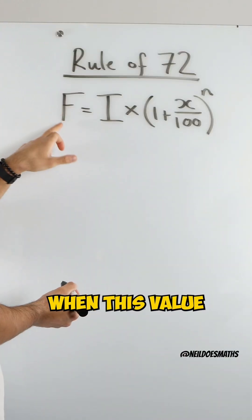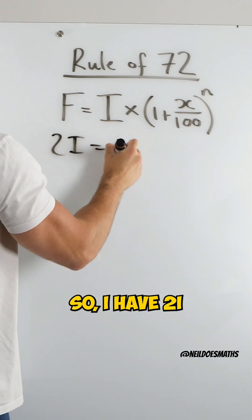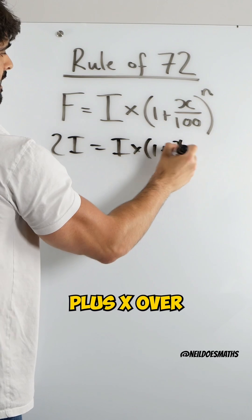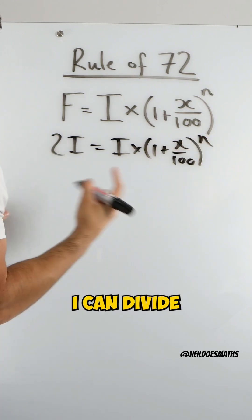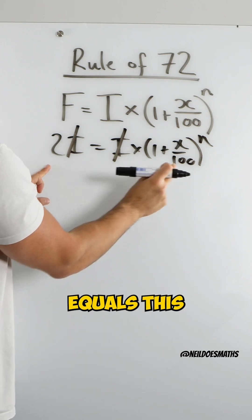I want to know when this value is double this one. So I have 2I equals I times 1 plus x over 100 to the power of n. I can divide both sides by I.